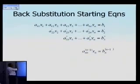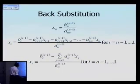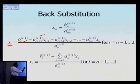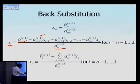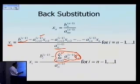Algorithmically, in back substitution you solve the last unknown first using one equation, one unknown. For general x sub i, you take b sub i, subtract the summation of the known x sub j values multiplied by their corresponding coefficients for j from i+1 to n, and divide by the diagonal element a sub i,i. The values of x sub j in the summation are the ones already found — so it's always solving one equation, one unknown at a time.